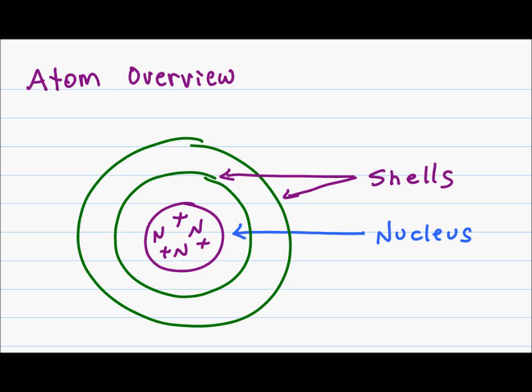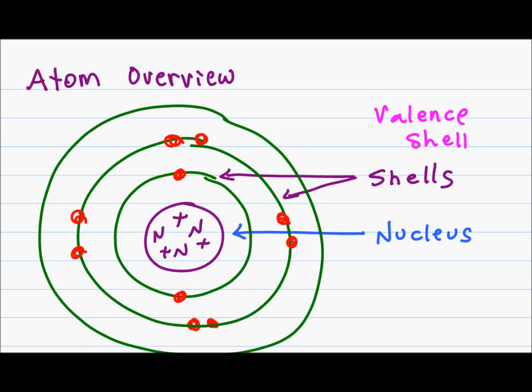These shells are where you will find the electrons that are orbiting around your nucleus. The electrons are each confined to their principal energy level, or their specific shell. The most important of these is called the valence shell, which is the outermost shell.